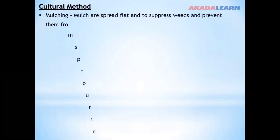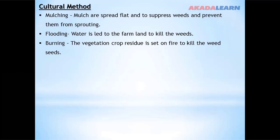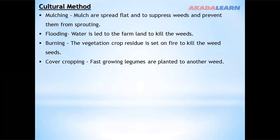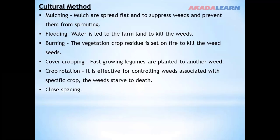The cultural method is a method of weed control in which everything used has to do with agricultural practices. For example, we have mulching — mulch is spread flat to suppress weeds and prevent them from sprouting. We have flooding — water is led to the farmland to kill weeds. Burning — crop residue is set on fire to kill weed seeds. Cover crops and fast-growing legumes are planted to smother the weeds. Crop rotation is also effective for controlling weeds associated with specific crops. We also have close spacing and closed season.